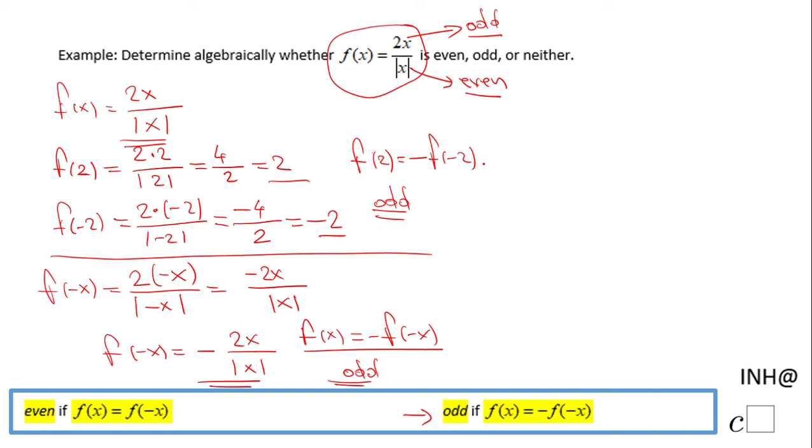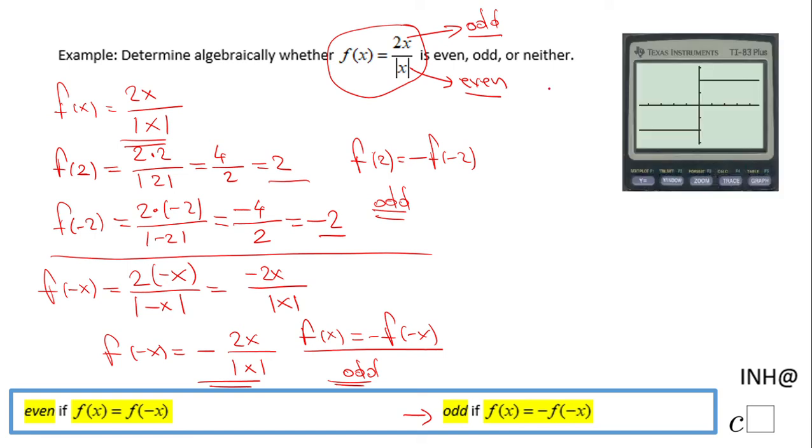We can see that also in the graph. I use a TI calculator. This is the graph of f of x. There is a symmetry in this graph with respect to the origin. That tells us this function is odd.